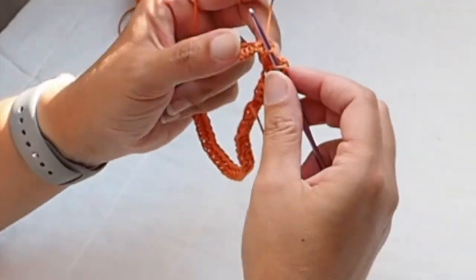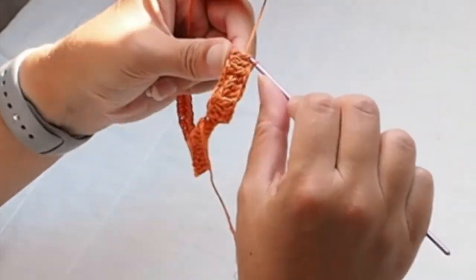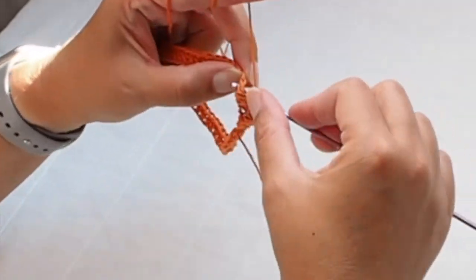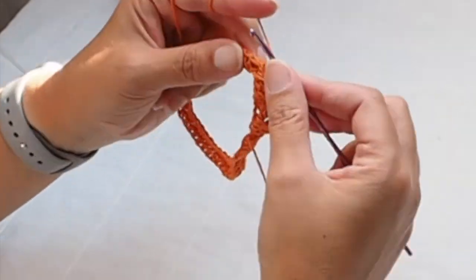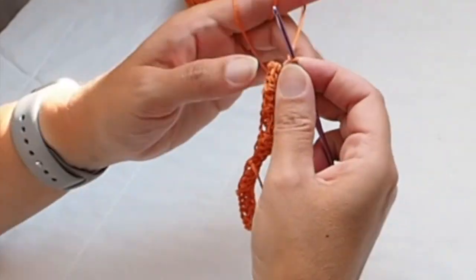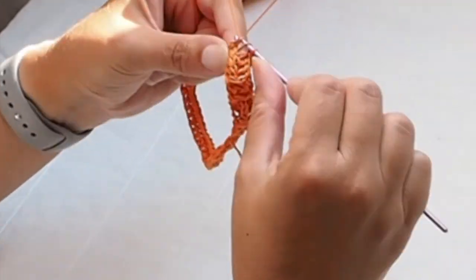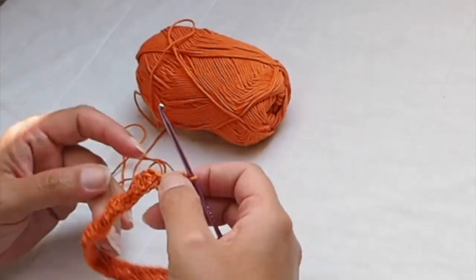I crochet the sleeve in rounds and I just repeat this pattern. Three front post double crochet and three back post double crochet, and in the next row the same pattern in front post double crochet.